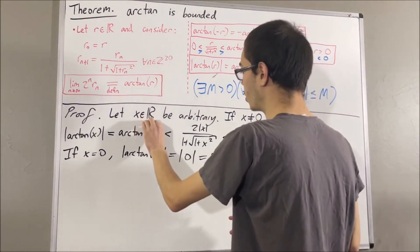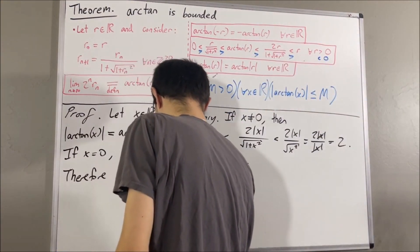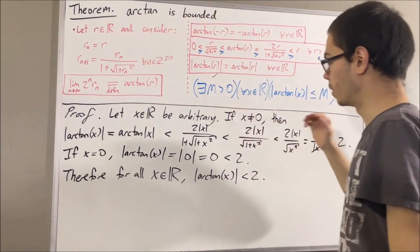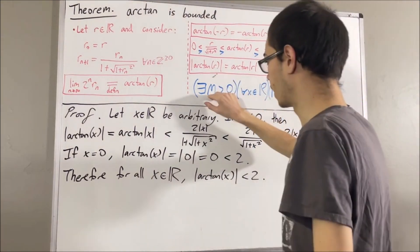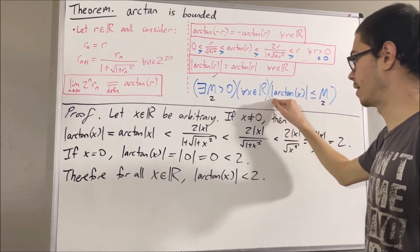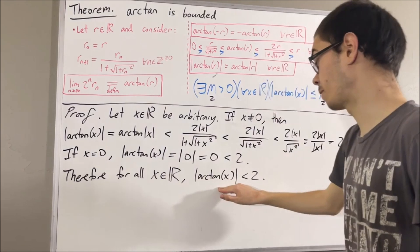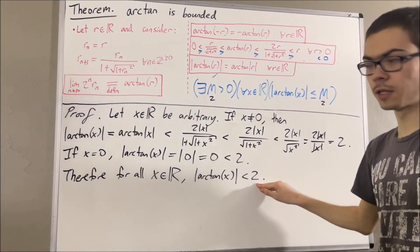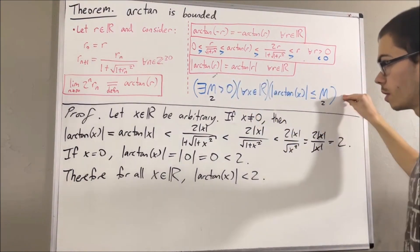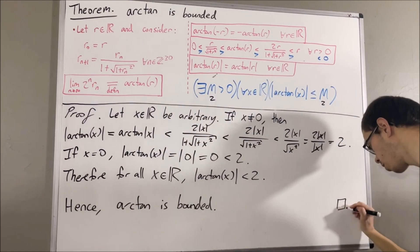And what this shows is that given any real number x, the absolute value of the arctangent of x is less than 2. This proves that the arctangent function is bounded. Because if we go to our definition and we take capital M to be 2, then it is true that for all x in the real numbers, the absolute value of arctangent of x is less than or equal to 2. In fact, we proved the strict inequality holds, but strict inequalities imply weak inequalities, so we have proven precisely this statement. So the arctangent function is bounded, and this completes the proof.